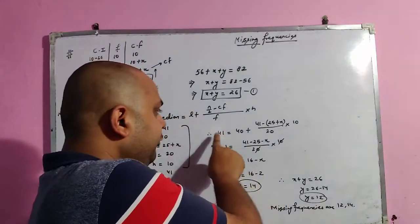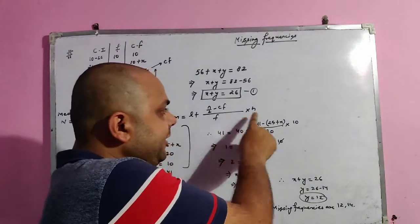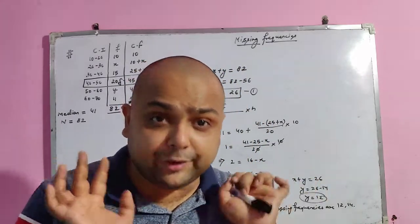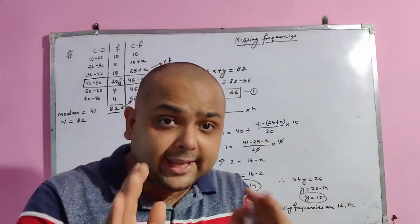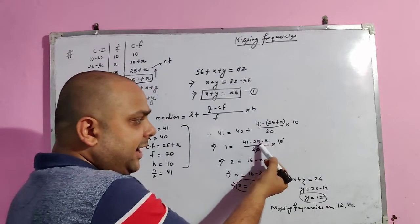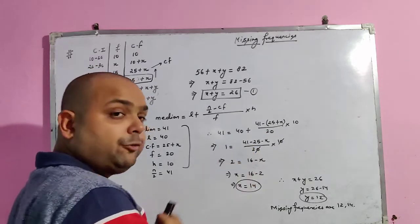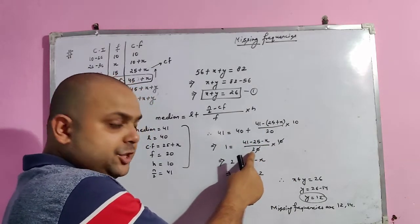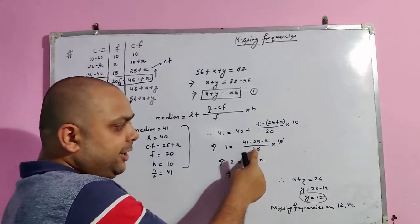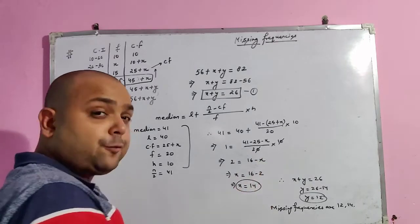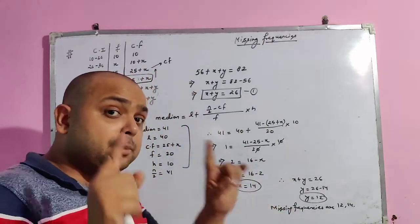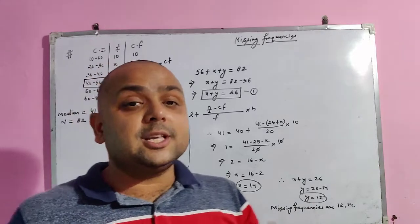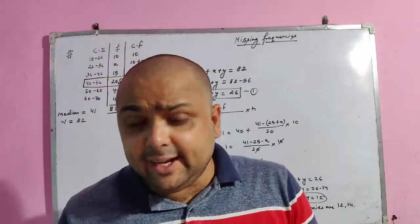Applying the formula: 41 = 40 + ((41 − (25+x)) / 20) × 10. Put the cf in brackets to avoid sign mistakes. Simplifying: 41 − 40 = 1 = (41 − 25 − x)/2. So 2 = 16 − x, giving x = 14. Substituting into x + y = 26 gives y = 12. The missing frequencies are x = 14 and y = 12.